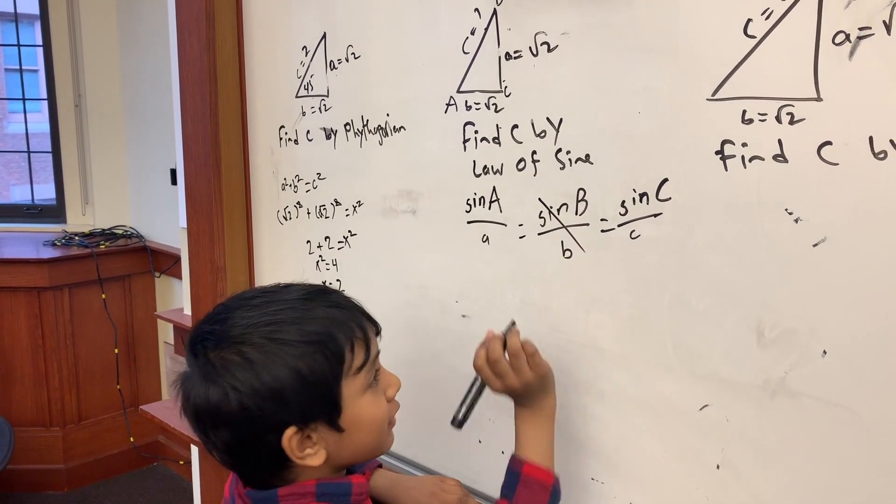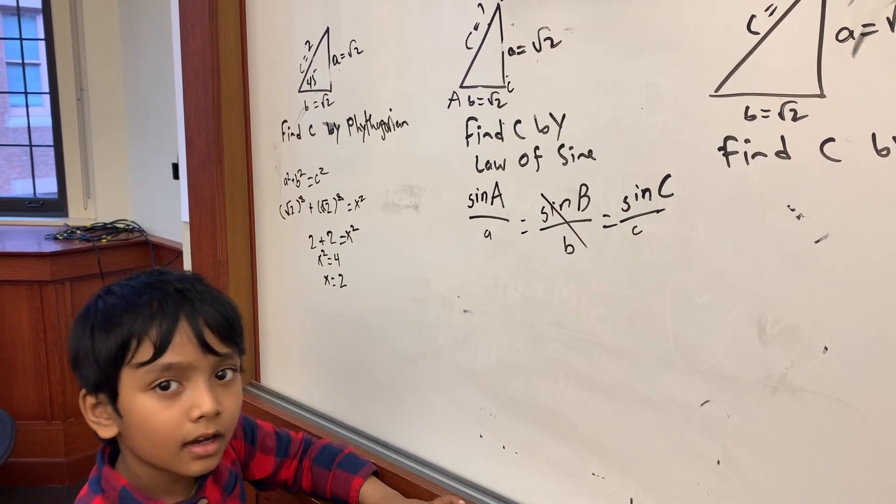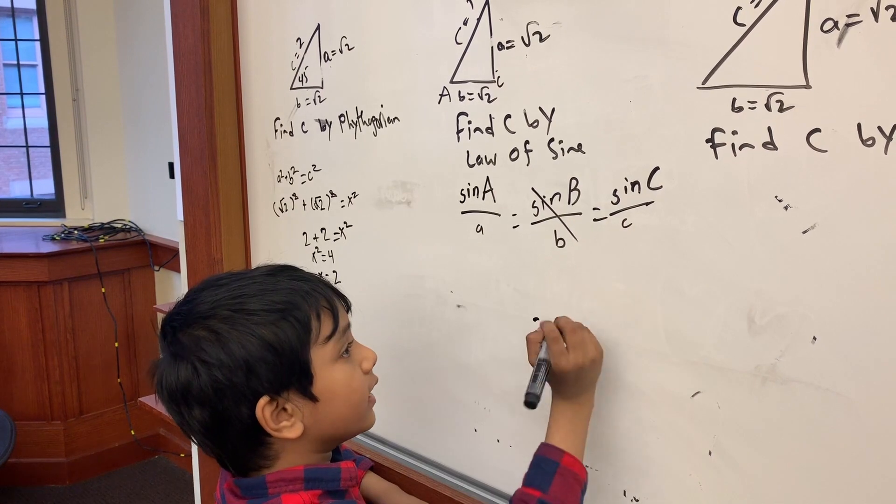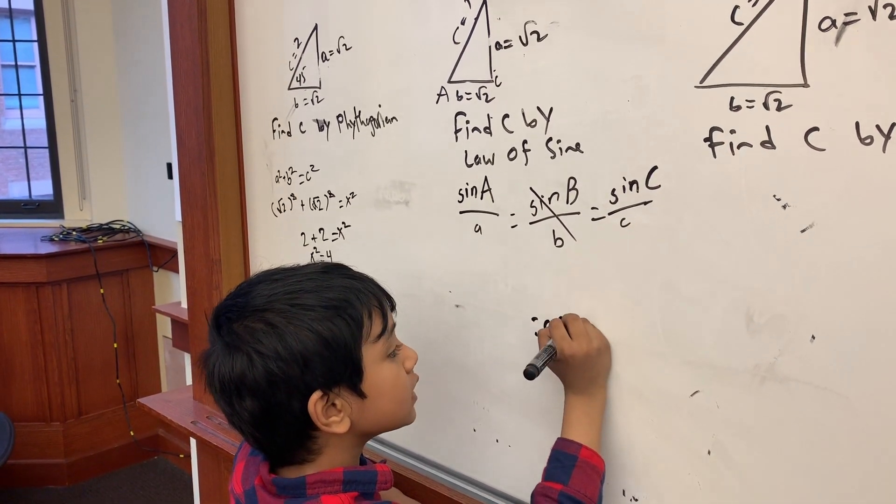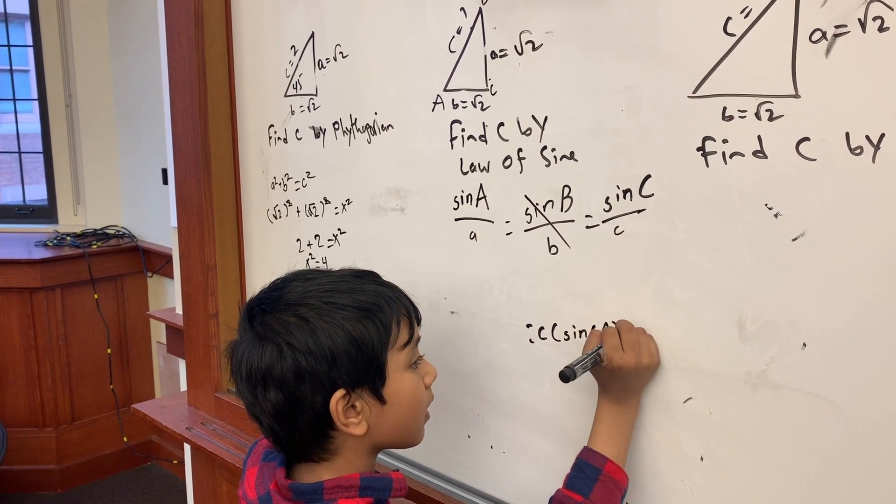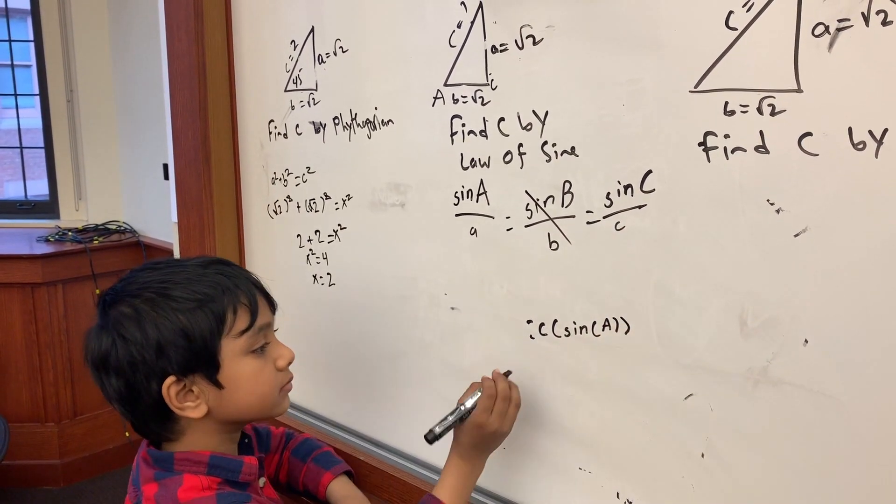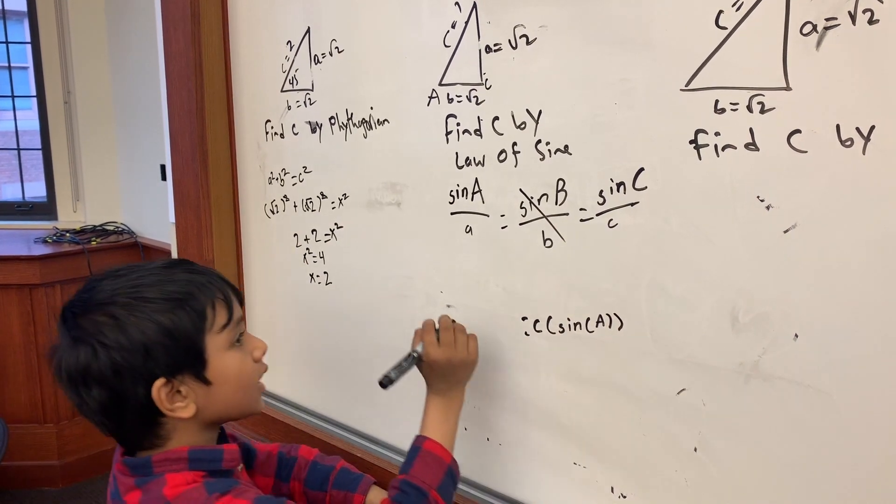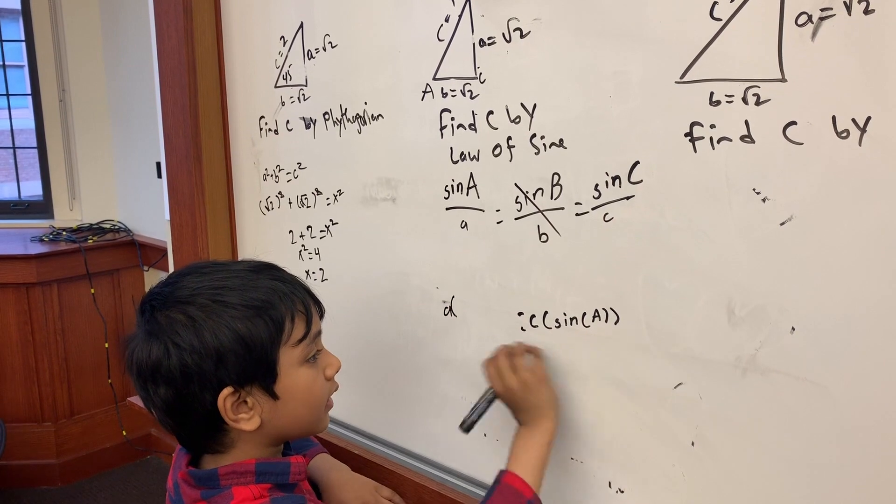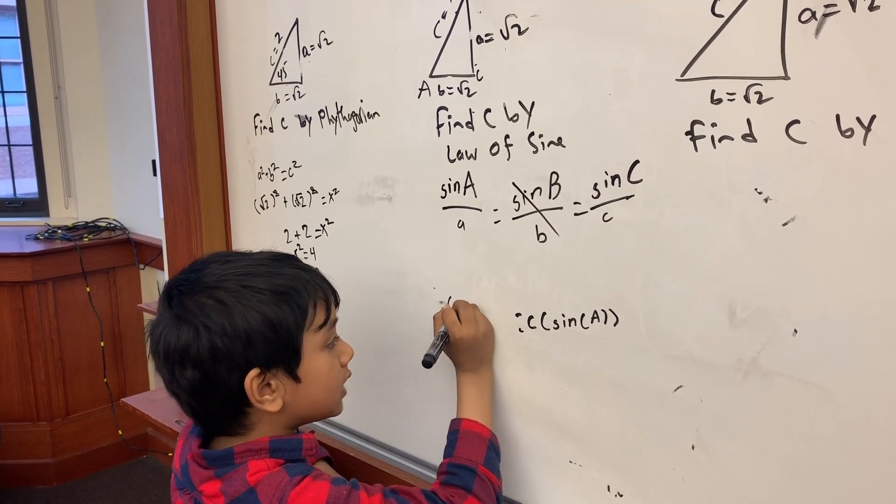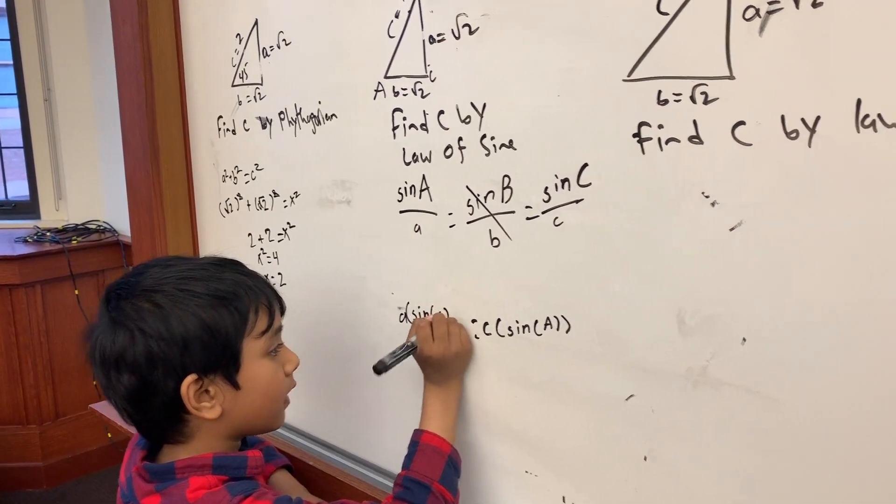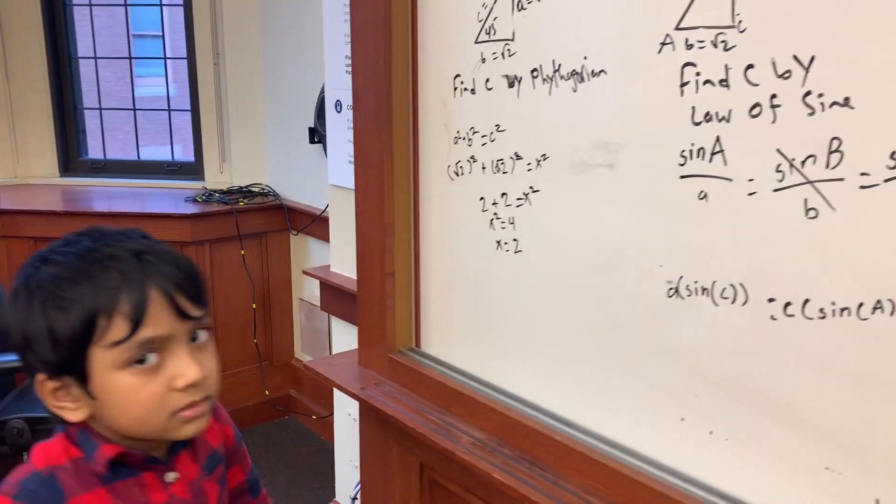So now we can do basically cross multiplication. So sine C, sine A. So this is A times sine... no, C. So we know that A, this A is root 2.